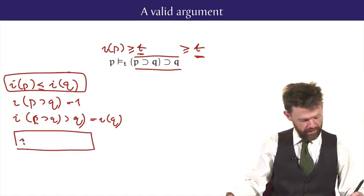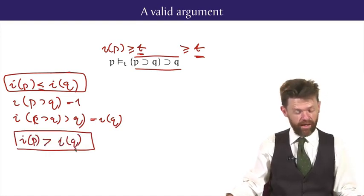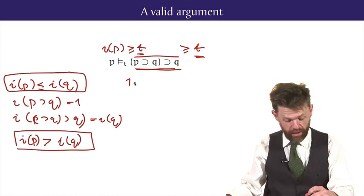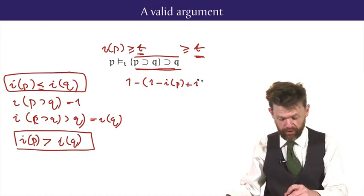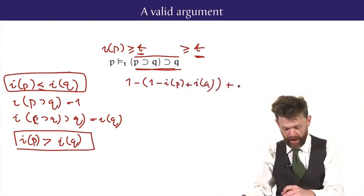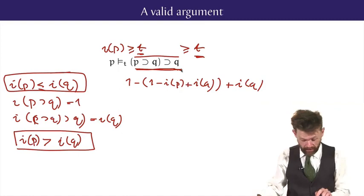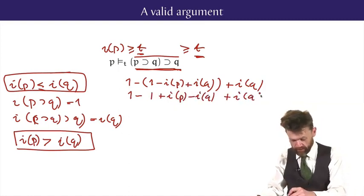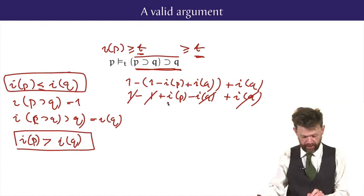On the other hand, if the interpretation of P is not less than or equal to, but rather greater than the interpretation of Q, then this conditional here has the following value, and I'll just write it out. It is 1 minus, now the value of P implies Q, is 1 minus the value of P plus the value of Q, and we've minused that, and we've added the value of Q, because now that's the consequence of this whole conditional. And I'll just look at this value and unpack it. That's 1 minus 1 plus the value of P minus the value of Q plus the value of Q, and the 1's cancel out, and the minus the value of Q and the minus of the value of Q cancel out, and you've got the value of P.